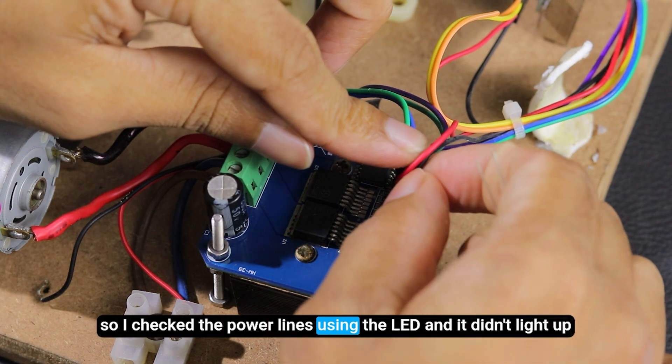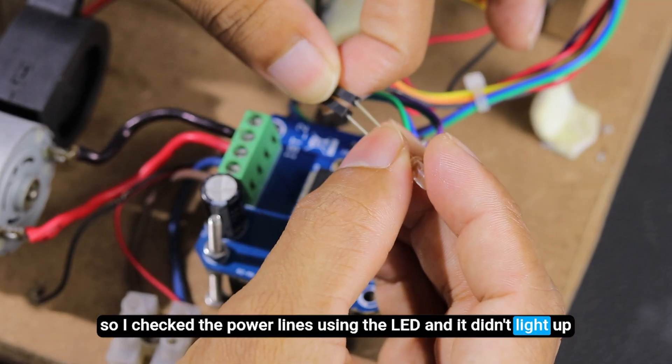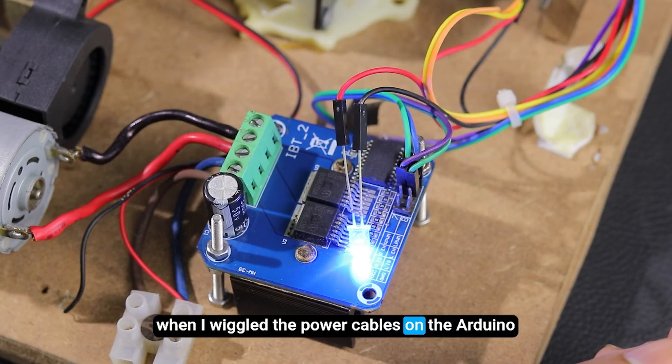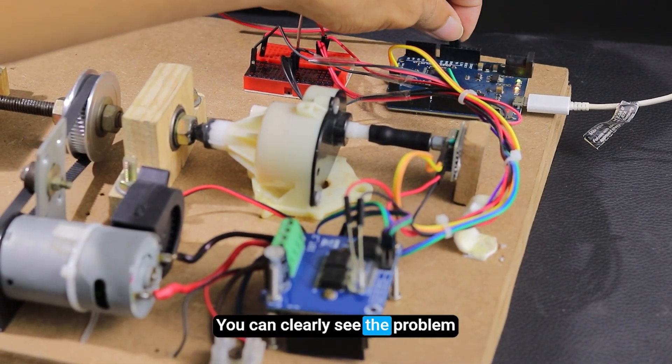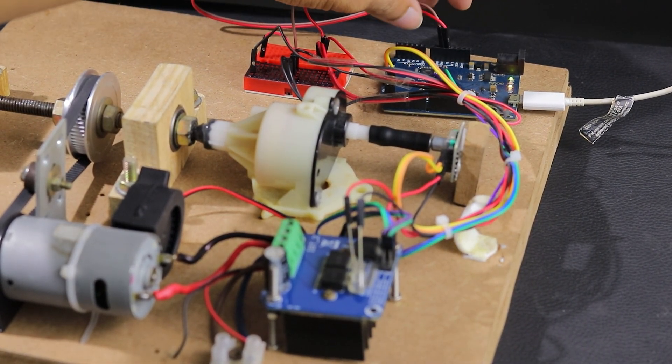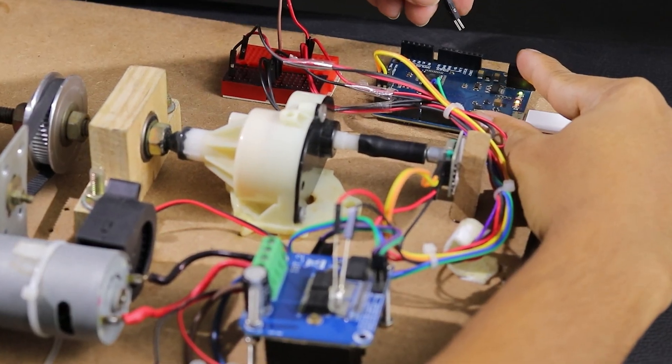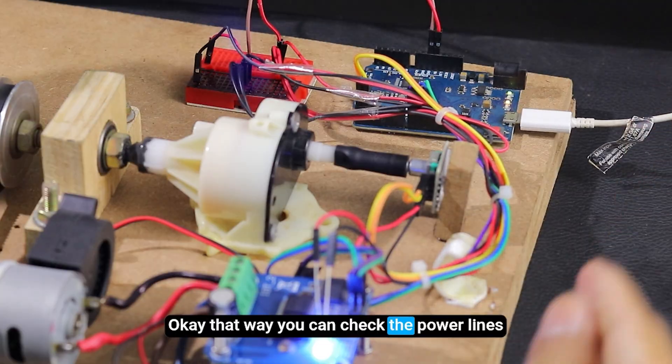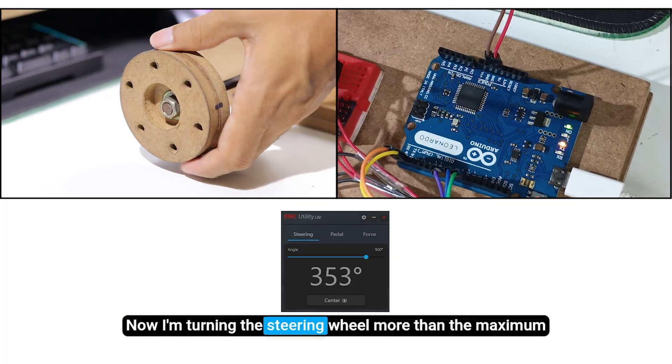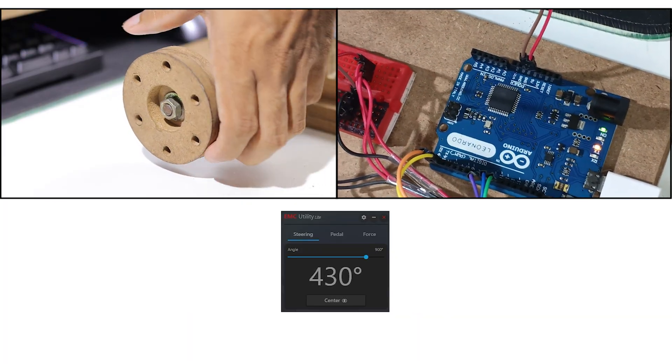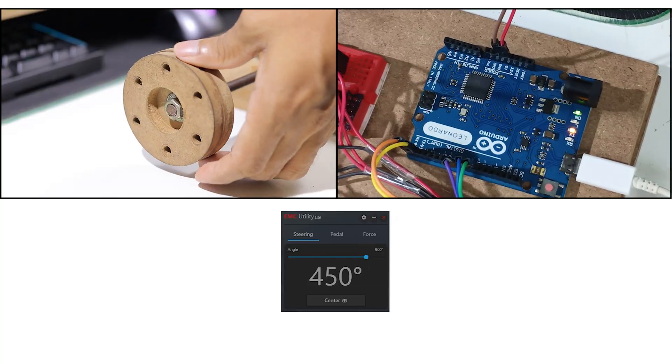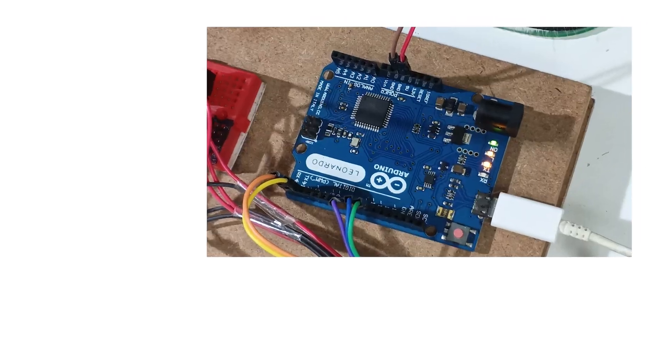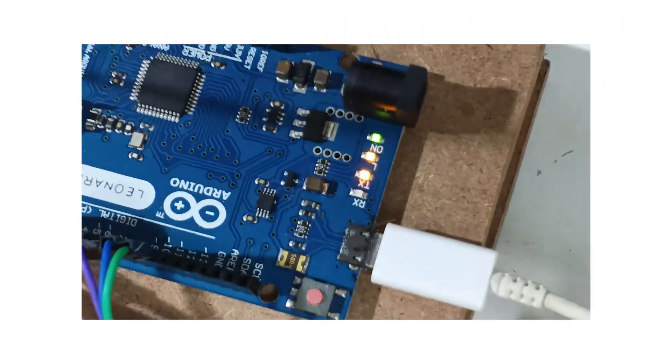So I checked the power lines using the LED, and it didn't light up. When I wiggled the power cables on the Arduino, you can clearly see the problem. Okay, that way you can check the power lines. Now I'm turning the steering wheel more than the maximum. When this LED turns on, it shows that the Arduino is sending a signal to the motor driver. So, it means the motor should be working now.